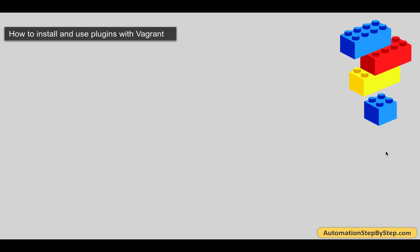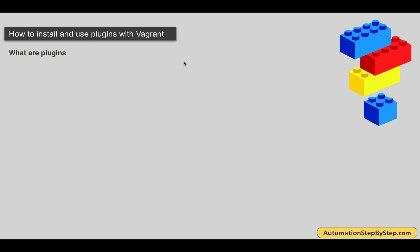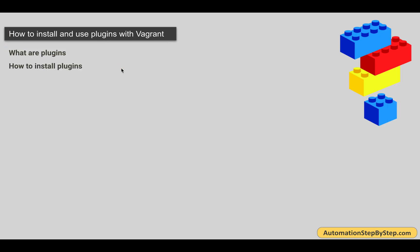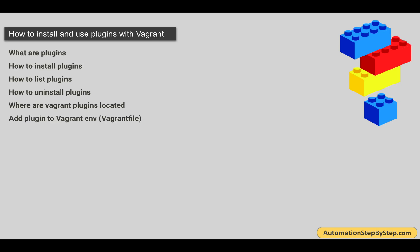Hello and welcome, I am Raghav and today we are going to learn step by step from scratch how to use and install plugins with Vagrant. This is going to be very easy and very interesting. We will start with what are plugins, then see how to install plugins, list all installed plugins, uninstall plugins, repair plugins, and see how to add plugin information in the Vagrantfile. We will also see a link where we can find all available plugins for Vagrant.